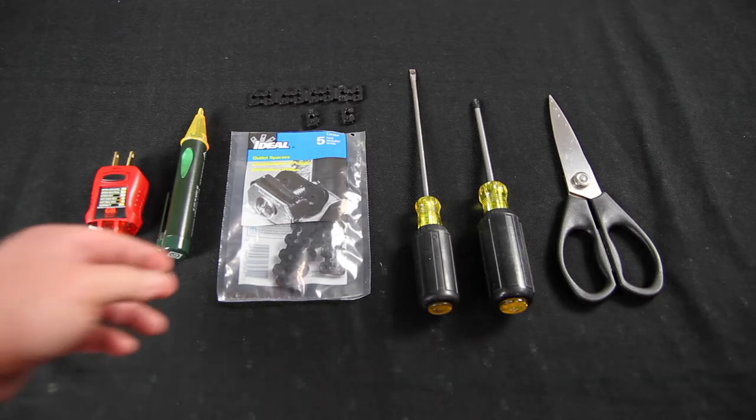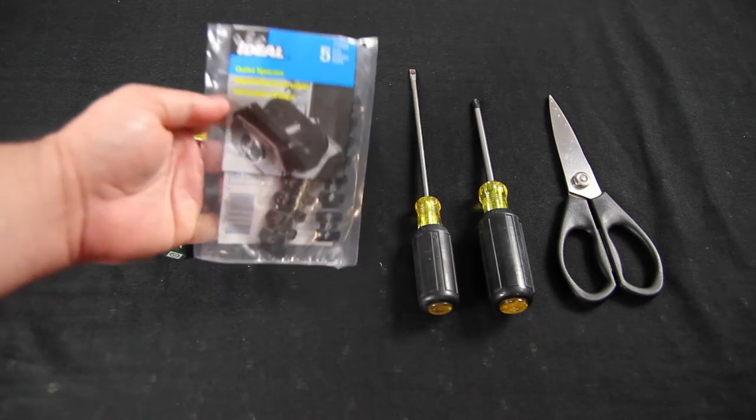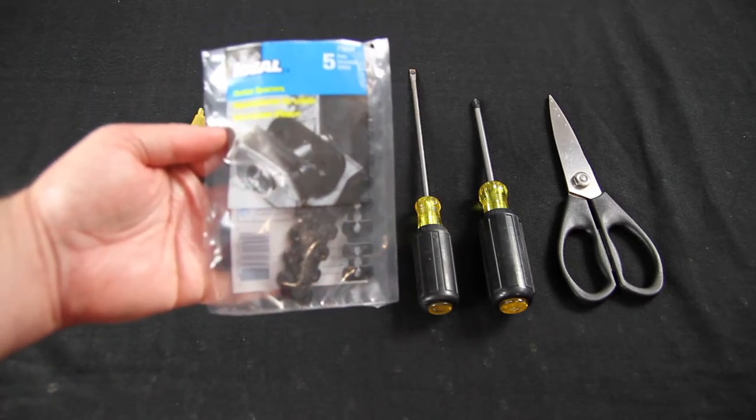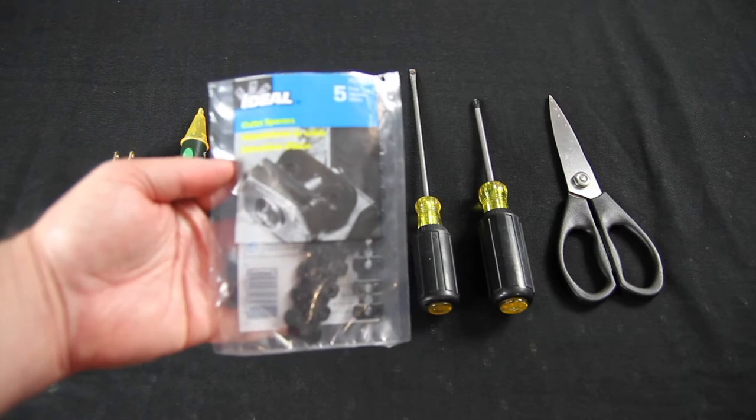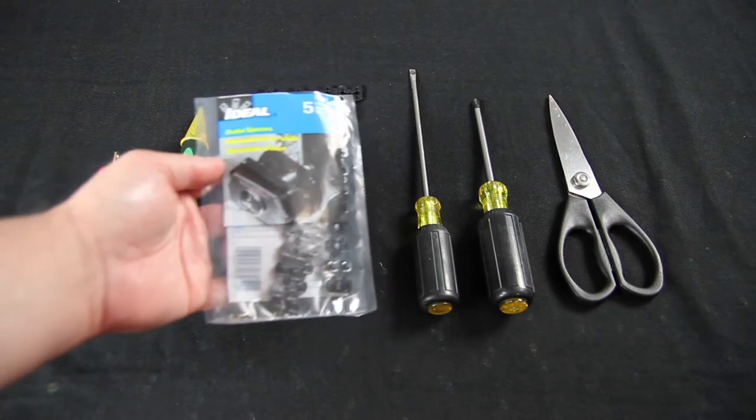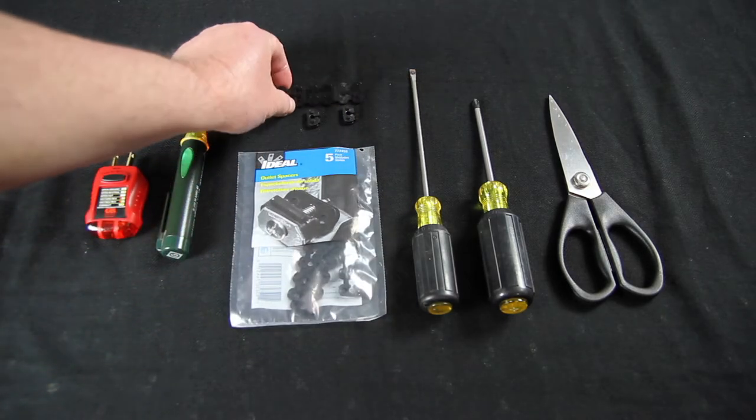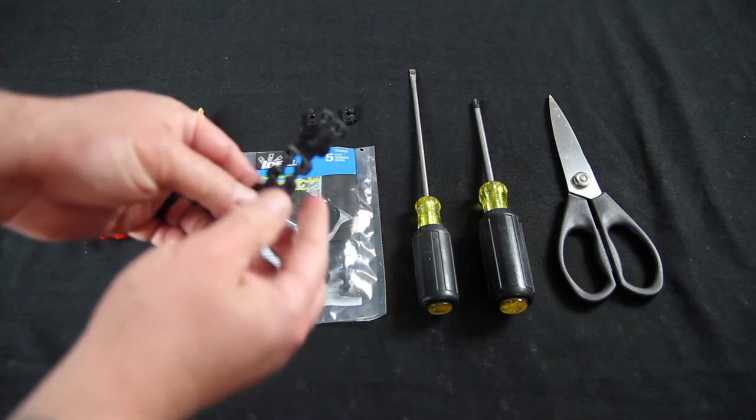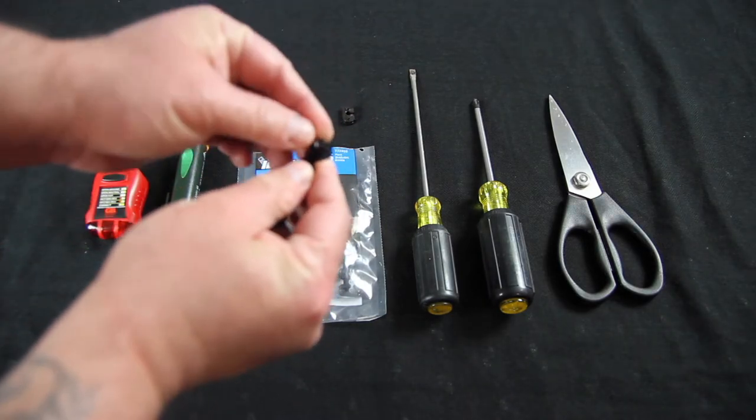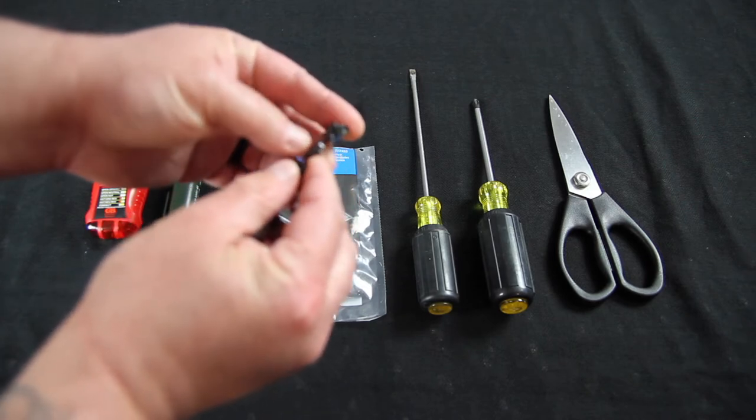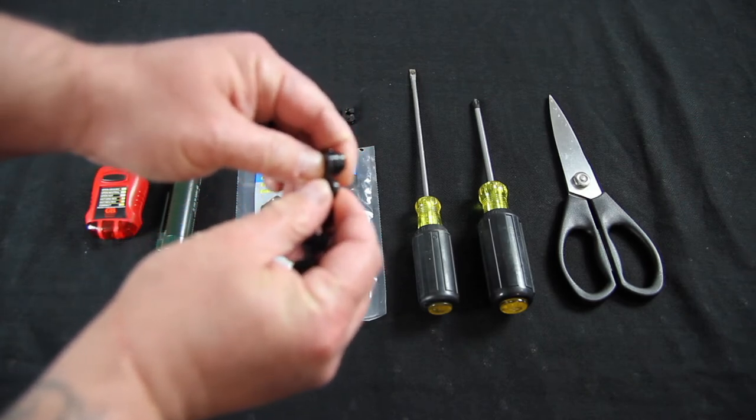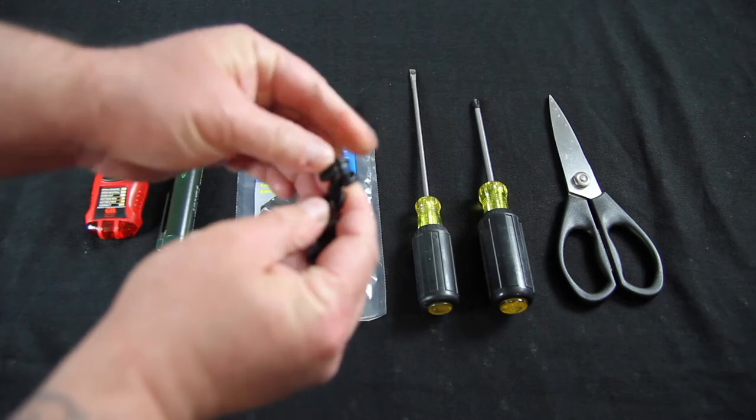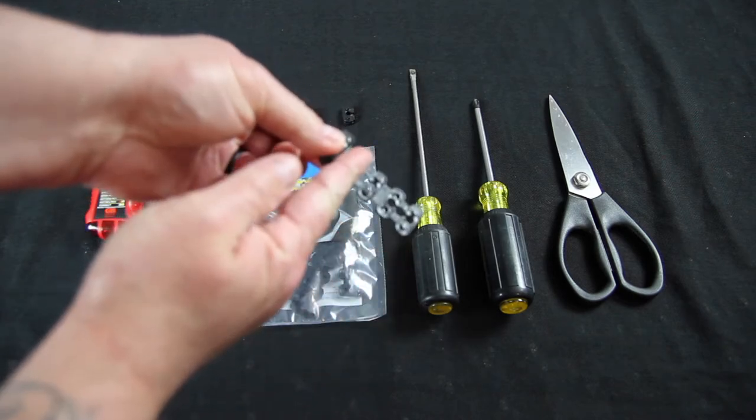The first thing we're going to need is some outlet spacers and these are actually made by Ideal and you can pick them up at any of your local home improvement stores. They actually look like this here, kind of like a Lego, and what they do is you can just fold them up. You just figure out how much space you need to take up and you can just fold them to take up as much space as you need. And then you just trim it off with some scissors.